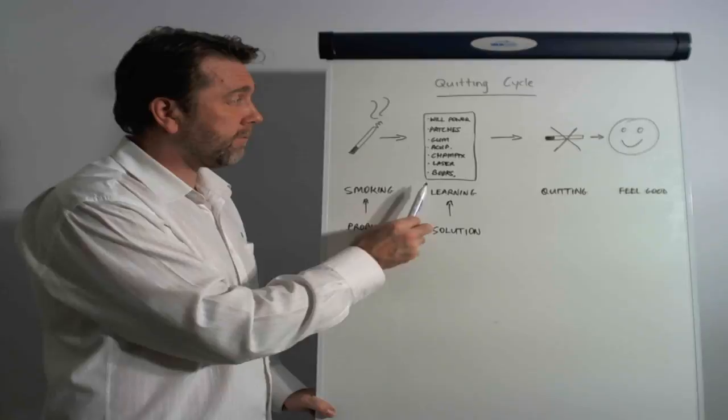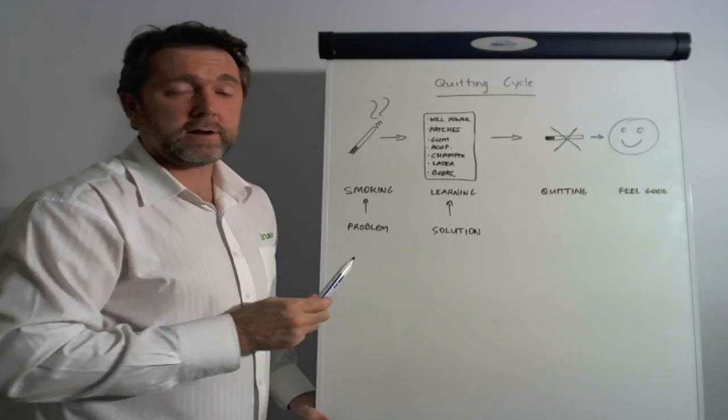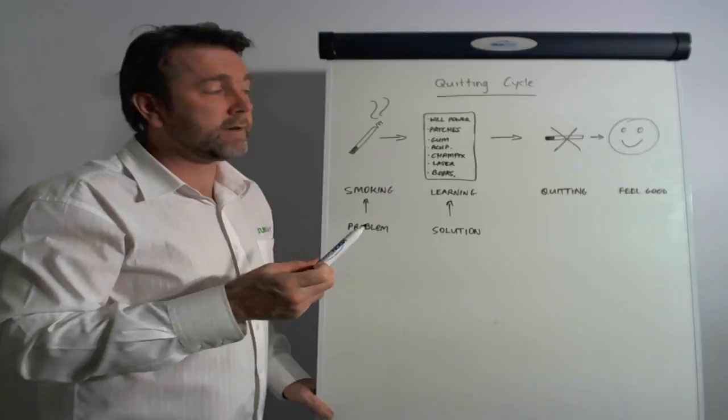So you come up with some options: willpower, patches, gum, acupuncture, champix, laser, books and seminars. In your learning you work out these various success rates and then pick an option, and your learning doesn't really go much past there.